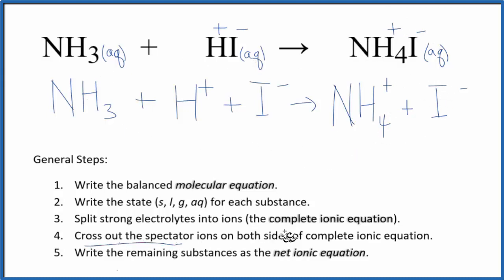Now, we can cross out spectator ions. They're on both sides of our complete ionic equation. The only thing I see the same is the iodide ion here in the reactants and again in the products. So, I'm going to cross that out.